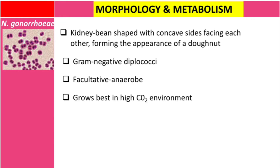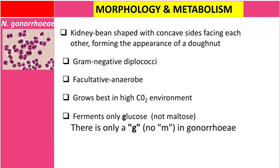It ferments only glucose — this is important — only glucose, not maltose. If you remember from the previous video on Neisseria meningitidis, that species ferments both glucose and maltose. That is why in the word 'meningitidis' you find both G and M, but in Neisseria gonorrhoeae you only find G. This is another way to differentiate the two species.